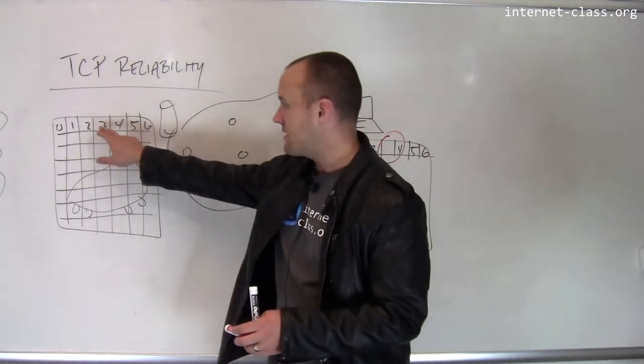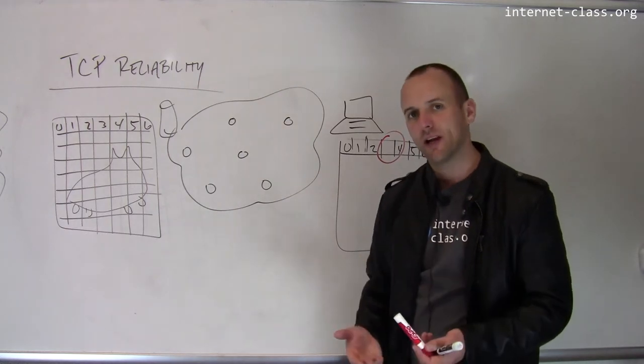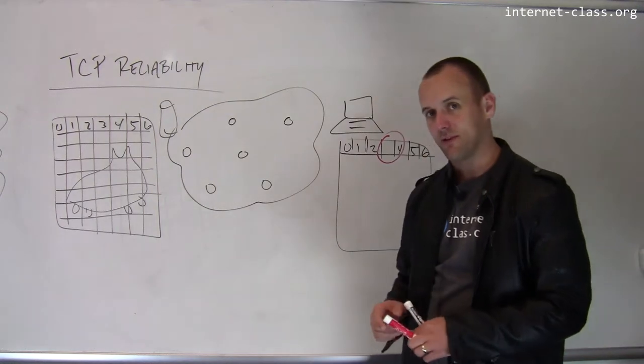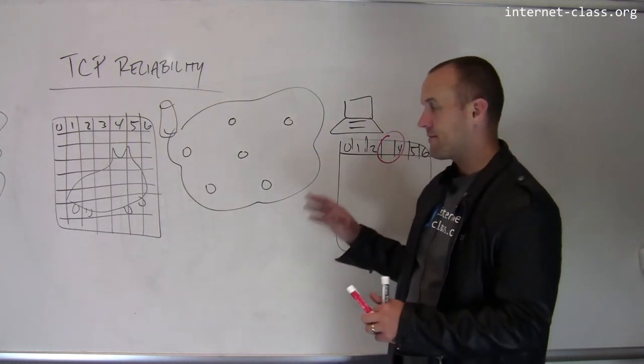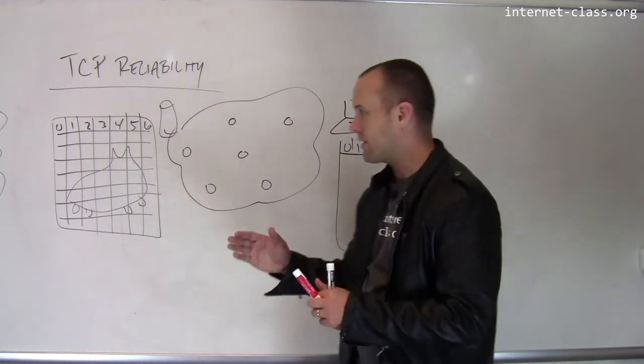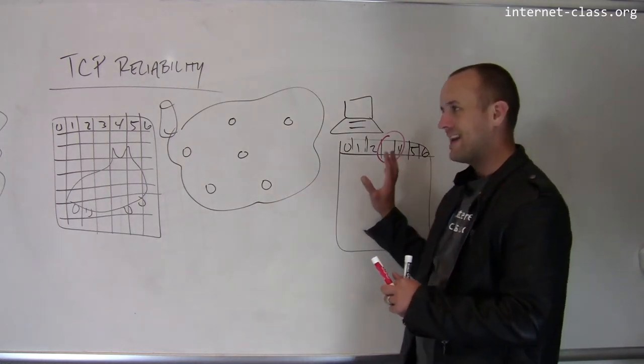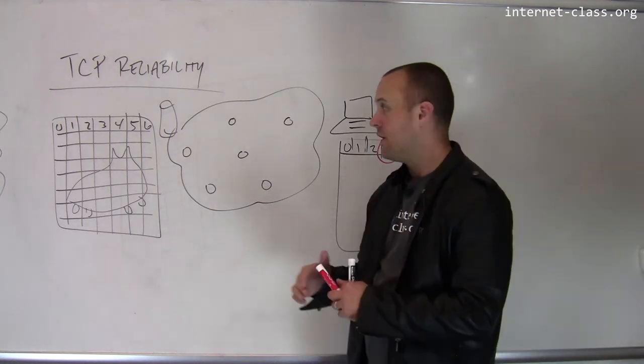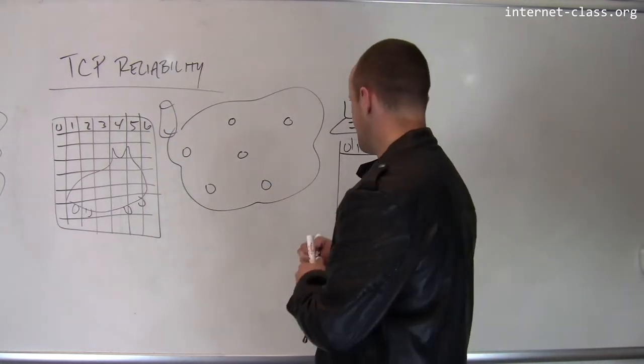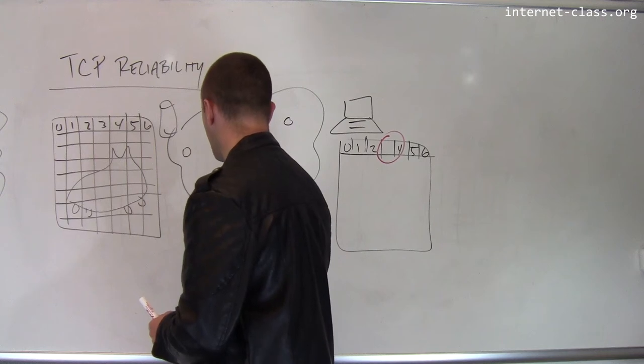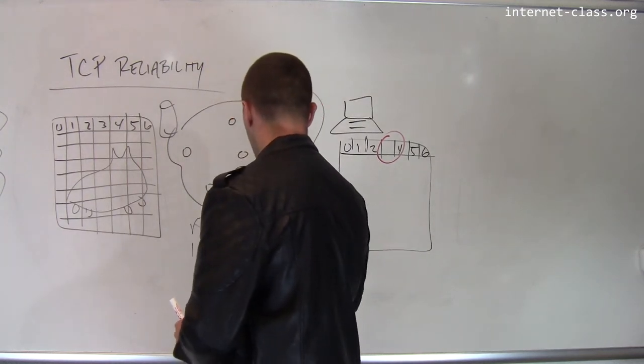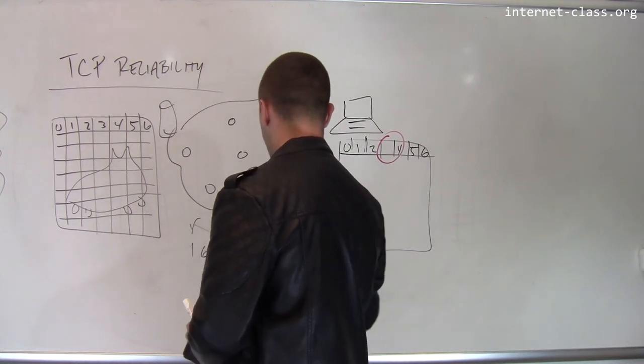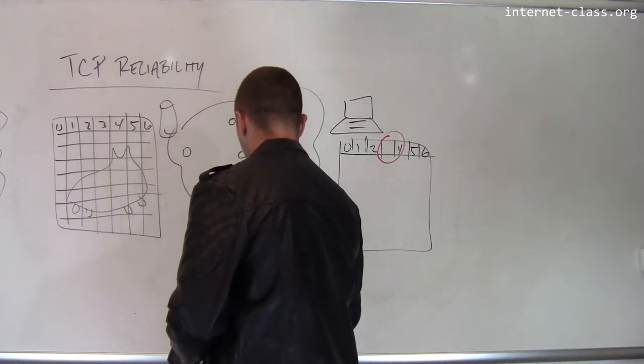So what the sender needs to do is it needs to retry or retransmit this packet to the receiver. The problem is, how does the sender know that the receiver didn't receive this packet? So one of the fundamental parts of TCP is a protocol in which the receiver is expected to acknowledge that it receives data from the sender. So the receiver would send a message back to the sender, and it would say, I got 0, 1, 2, 4, 5, and 6, missing 3.